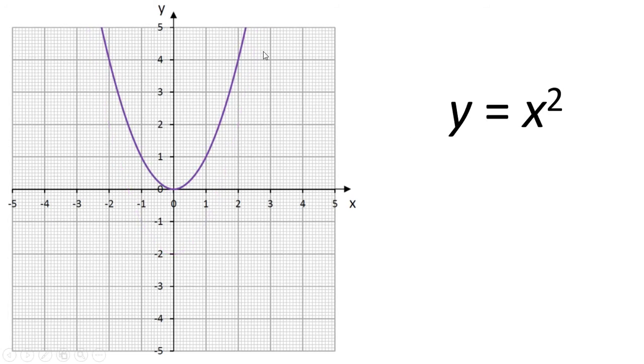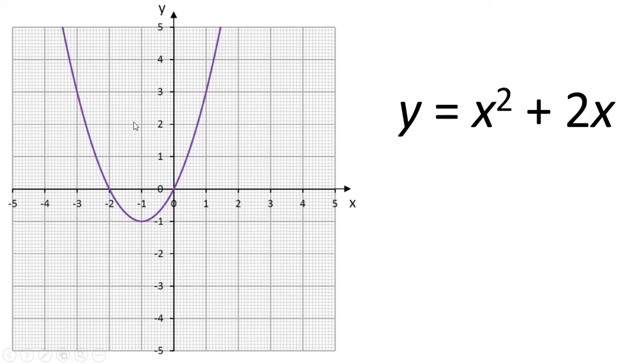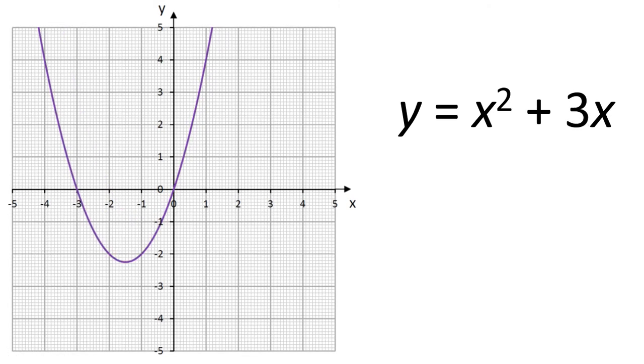So what about if we add x to this? So if we have y equals x squared plus x, the line on the graph gets shifted down and to the left a bit. x squared plus 2x gets shifted down further and shifted across to the left further. x squared plus 3x even further. So by adding x, we shift that line to the left and down.